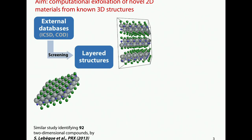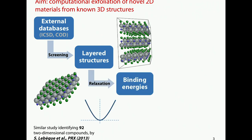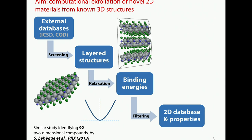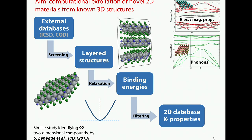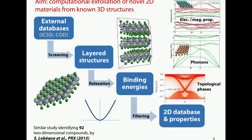We look for structures that look layered using a screening algorithm that I will describe — we really want to see gaps between some layers. When we have found them, we put a bit more physics inside: we turn to DFT calculations first to relax those 3D structures and then to compute the energy between layers to make sure these are really weakly bonded. From that, we can filter even further and get our 2D database, which we can populate with properties: electronic, magnetic, phonons, and eventually topological phases.